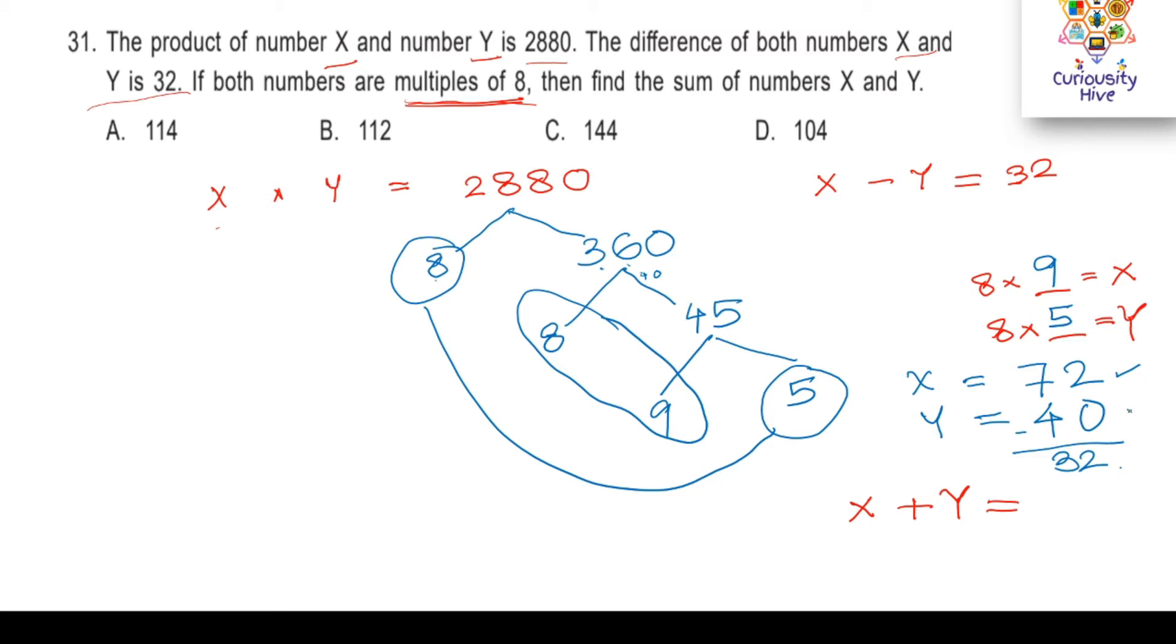If you calculate, you will get 72 minus 40 is actually 32. We know that this is the right answer because the question also says that the difference between the numbers is 32. And now, finally, x plus y, that is 72 plus 40, will be equal to 112. Hence, the right answer is option B.